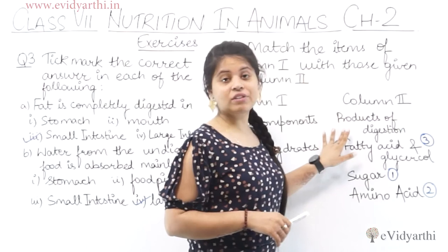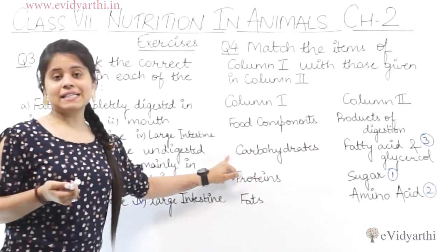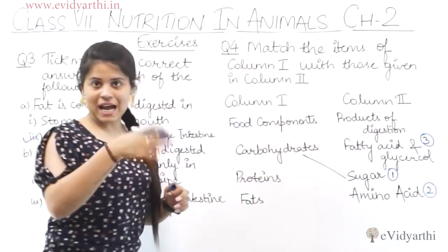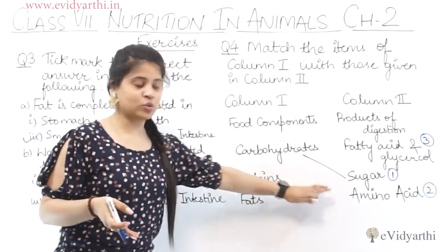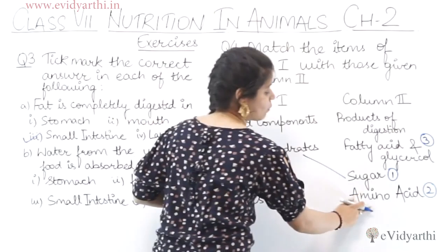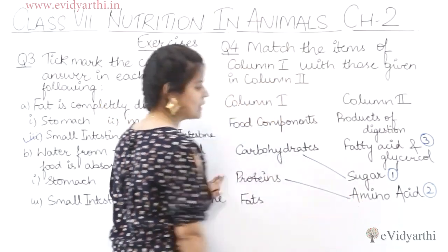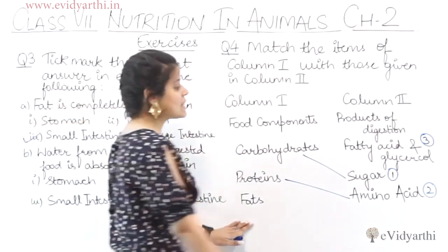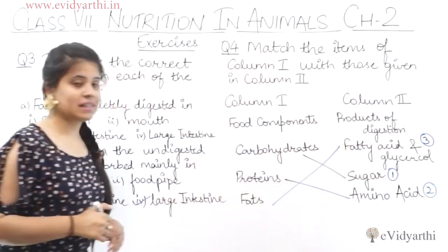Carbohydrates — how are they digested? Starch breakdown results in sugar, so carbohydrates are matched with sugar. Then we have proteins — for digestion of proteins, we require amino acids, so proteins are matched with amino acids. Then we have fats — fats are matched with fatty acids and glycerin.